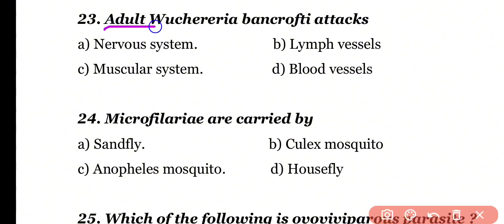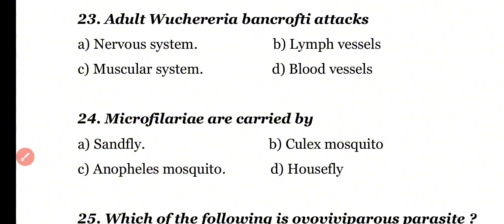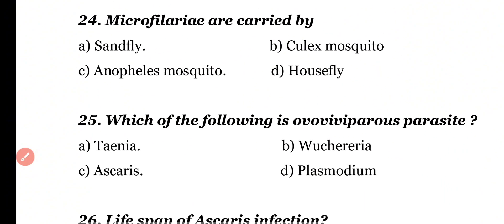Question 23: Adult Wuchereria bancrofti attacks the nervous system, lymph vessels, muscular system, or blood vessels. Correct answer is option B. Adult Wuchereria bancrofti causes filariasis, which mainly attacks the lymph vessels of the patient.